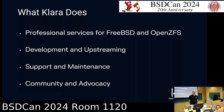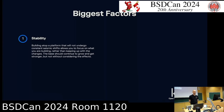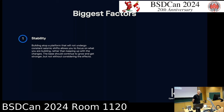Some of our customers chose FreeBSD as the platform for their appliance or product or service. The biggest factor is often stability — when you build something on top of FreeBSD, the APIs and the way it works isn't going to change out from under you every new release. We have customers building on Linux where an API gets deprecated, or a symbol becomes GPL-only and they're out of luck.